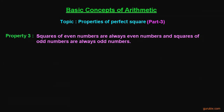Welcome friends. This is the third property of perfect squares. According to this property, squares of even numbers are always even numbers, and squares of odd numbers are always odd numbers.